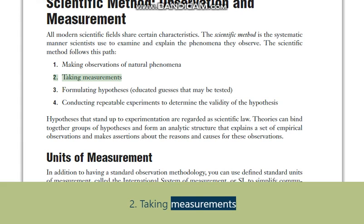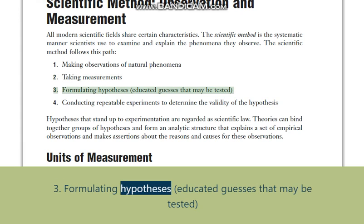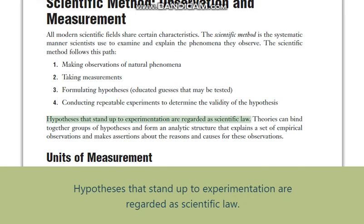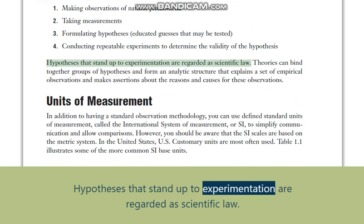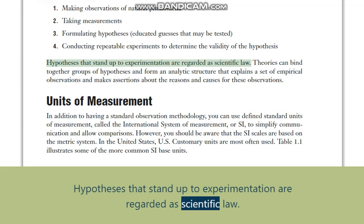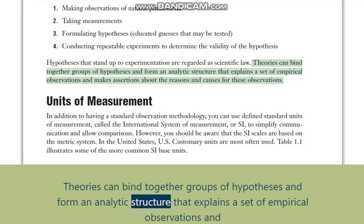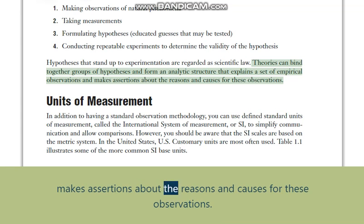2. Taking measurements. 3. Formulating hypotheses — educated guesses that may be tested. 4. Conducting repeatable experiments to determine the validity of the hypothesis. Hypotheses that stand up to experimentation are regarded as scientific law. Theories combine together groups of hypotheses and form an analytic structure that explains a set of empirical observations and makes assertions about the reasons and causes for these observations.